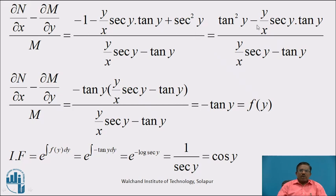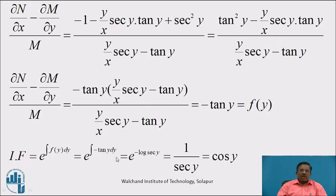Simplifying, using sec²y - 1 = tan²y, the numerator becomes -tan y · (y/x · sec y - tan y), and the denominator is (y/x · sec y - tan y). These cancel, giving -tan y, which is a function of y alone. Therefore f(y) = -tan y. By Rule 2, the integrating factor is e^(∫-tan y dy) = e^(-log sec y) = 1/sec y = cos y.